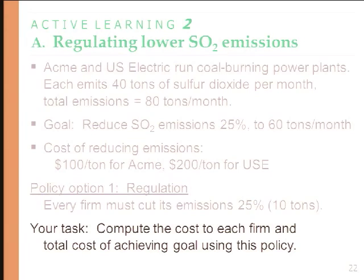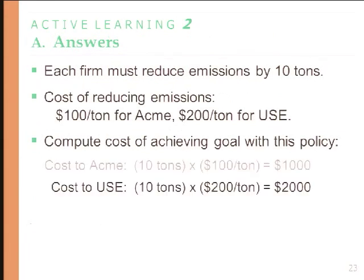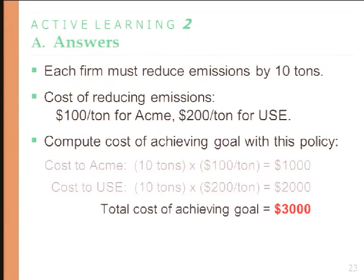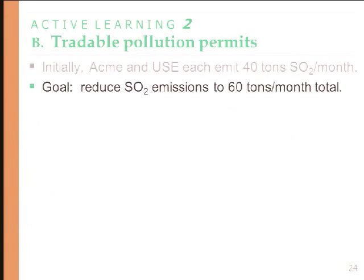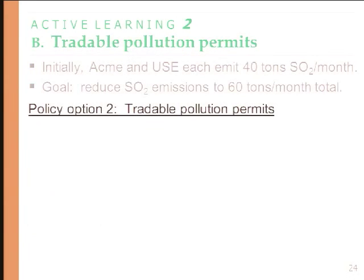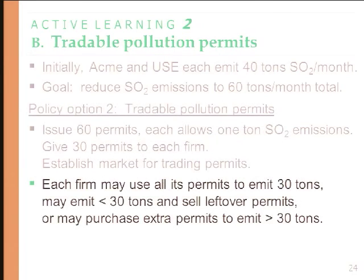The facts are exactly the same: each firm emits 40 tons of sulfur dioxide per month, and the goal is to reduce total emissions to 60 tons — a reduction of 20 tons. With tradable pollution permits, the government issues 60 permits total, each allowing one ton of sulfur dioxide to be emitted, and grants each firm 30 permits, while establishing a market for trading. Each firm can emit less than 30 tons and sell permits, or emit more by buying additional permits — this is cap and trade, with the cap at 60 tons. Suppose Use buys 10 permits from Acme, paying $150 per permit. Compute the cost.